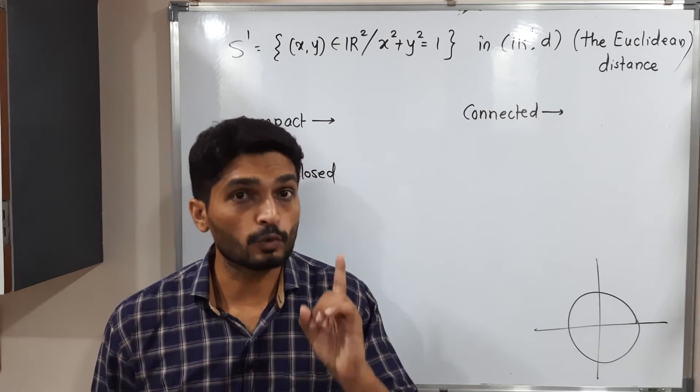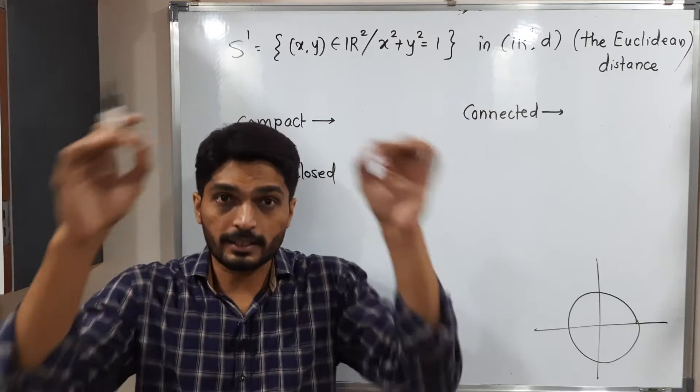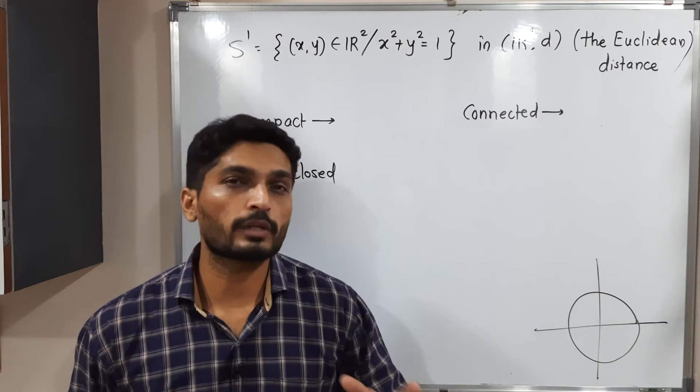That's why this set is closed, so therefore we say S1 is closed. So let us talk about is it bounded or not. It is bounded since we have a fixed radius, radius 1. No point of that set will go away from this radius 1.